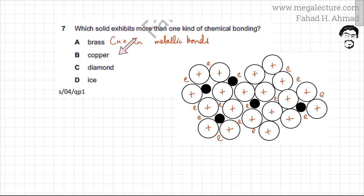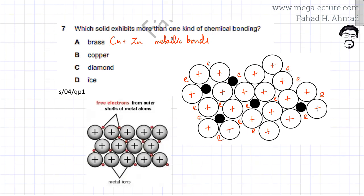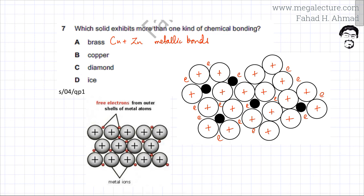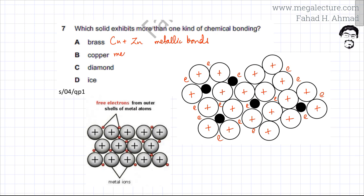Option B is copper, a pure metal with a similar type of structure. In the metallic lattice of copper, ions are more regularly arranged because all ions are the same size — unlike brass which had a mixture of different-sized ions. You still have positive ions in a sea of free-moving electrons, and the only bonds present are metallic bonds.